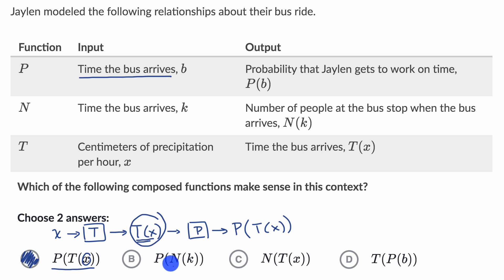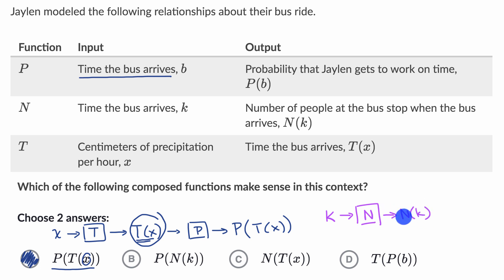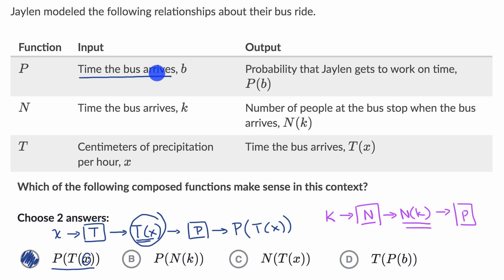Now let's look at the next choice: p as a function of n of k. We're taking k, the time the bus arrives, inputting it into function n, which outputs n of k — the number of people at the bus stop when the bus arrives. Then we're trying to put that into function p. But that does not make sense: p wants as an input the time the bus arrives, but we're giving it the number of people at the bus stop. So I do not like this choice.